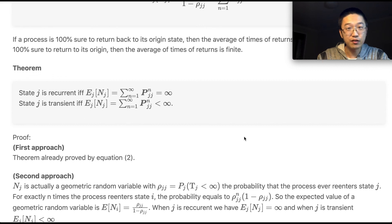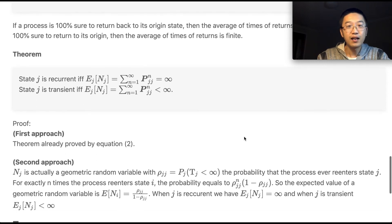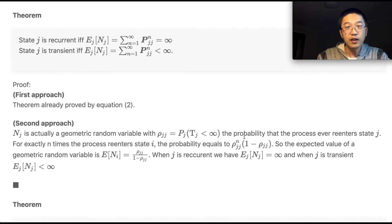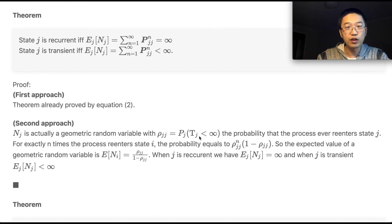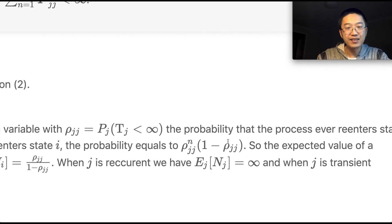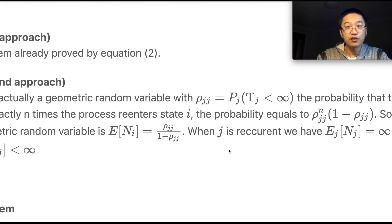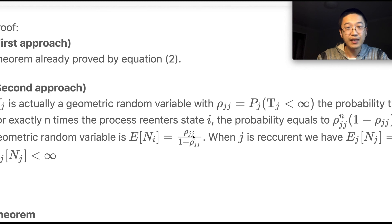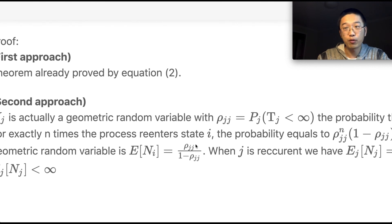There's a more intuitive way to see this. Given ρ_jj as the probability the process ever re-enters state j, the number of returns follows a geometric distribution: P(N_j = n) = ρ_jj^n · (1 − ρ_jj), with expected value ρ_jj / (1 − ρ_jj) — consistent with what we proved in Equation 3.